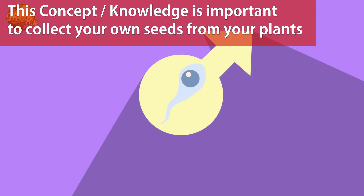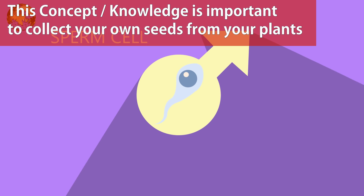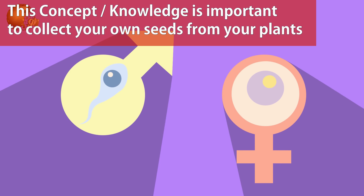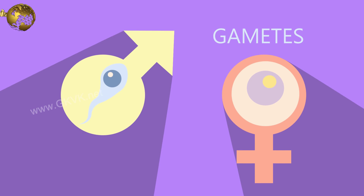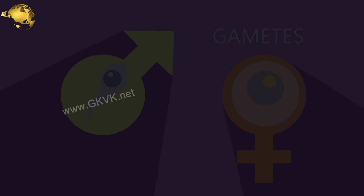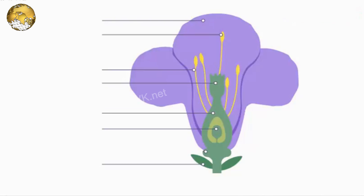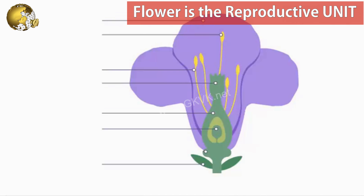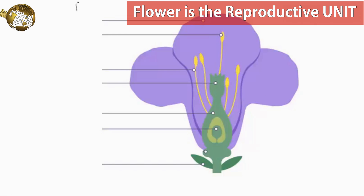Keeping this concept in mind, for the formation of seeds or to collect your own seeds for your garden and also for plant propagation, you must know a few more concepts and terms of botany in gardening. The first thing is the flower — the flower is the reproductive unit of many plants.